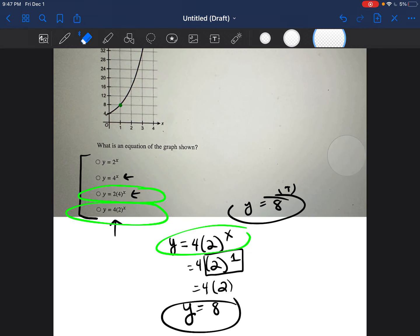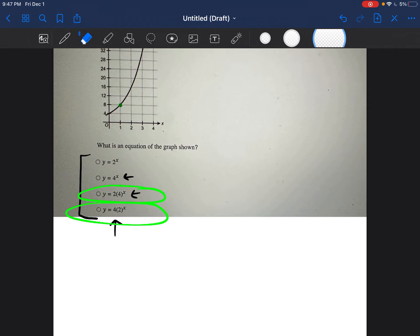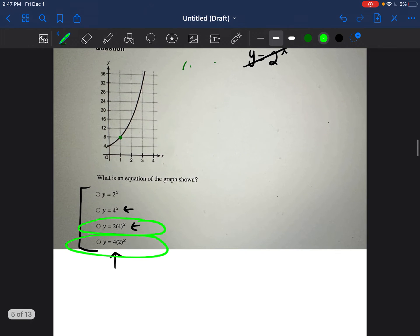So instead of doing 1 comma 8, we're going to look to see, is there another point in this graph that we can use? So how about 2 comma 16?